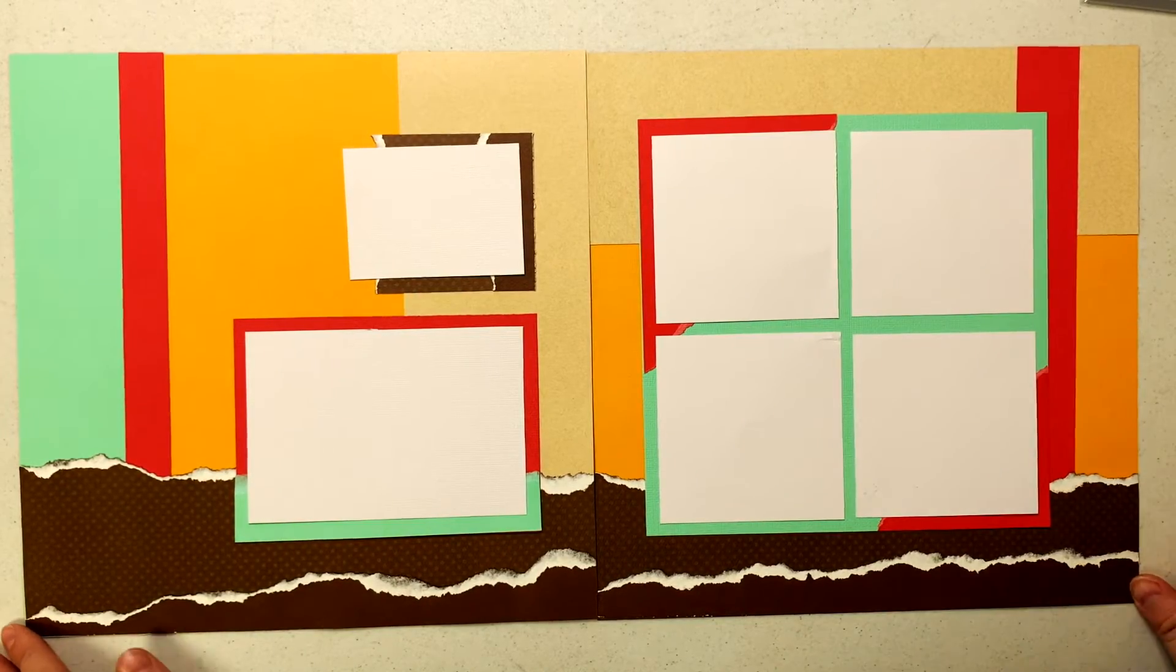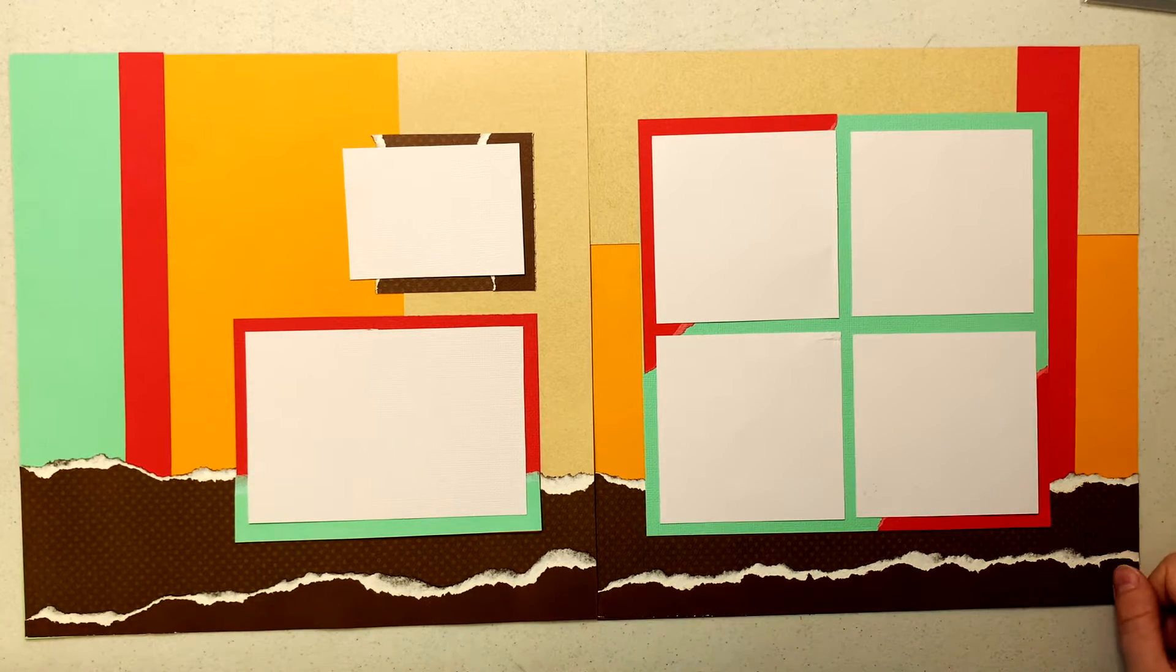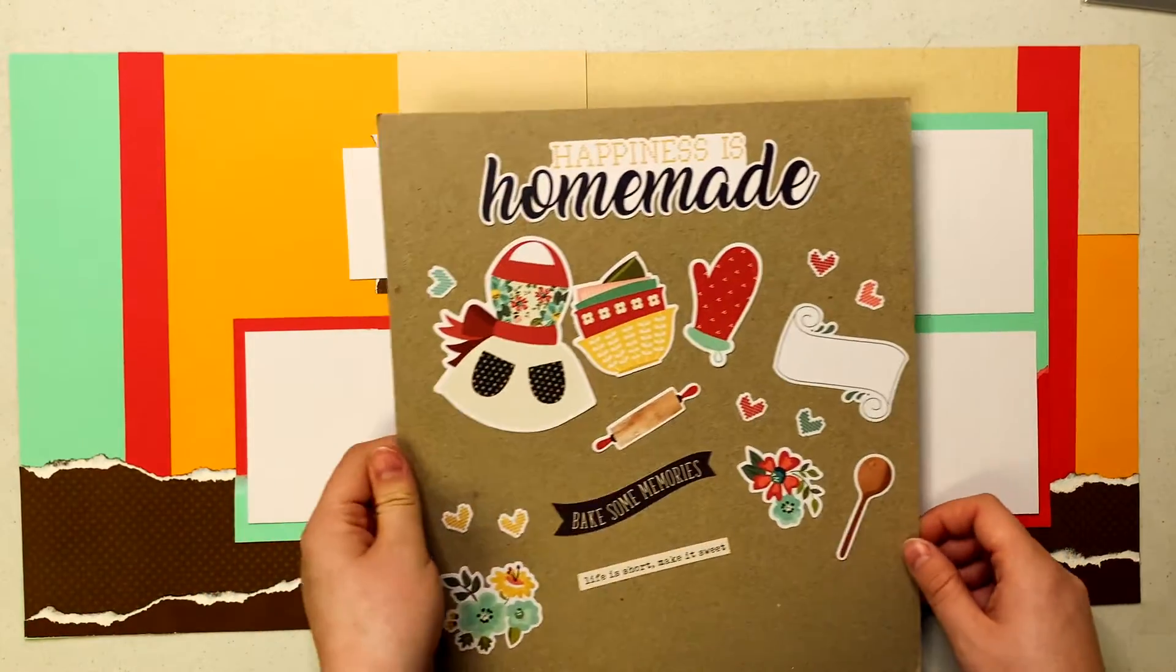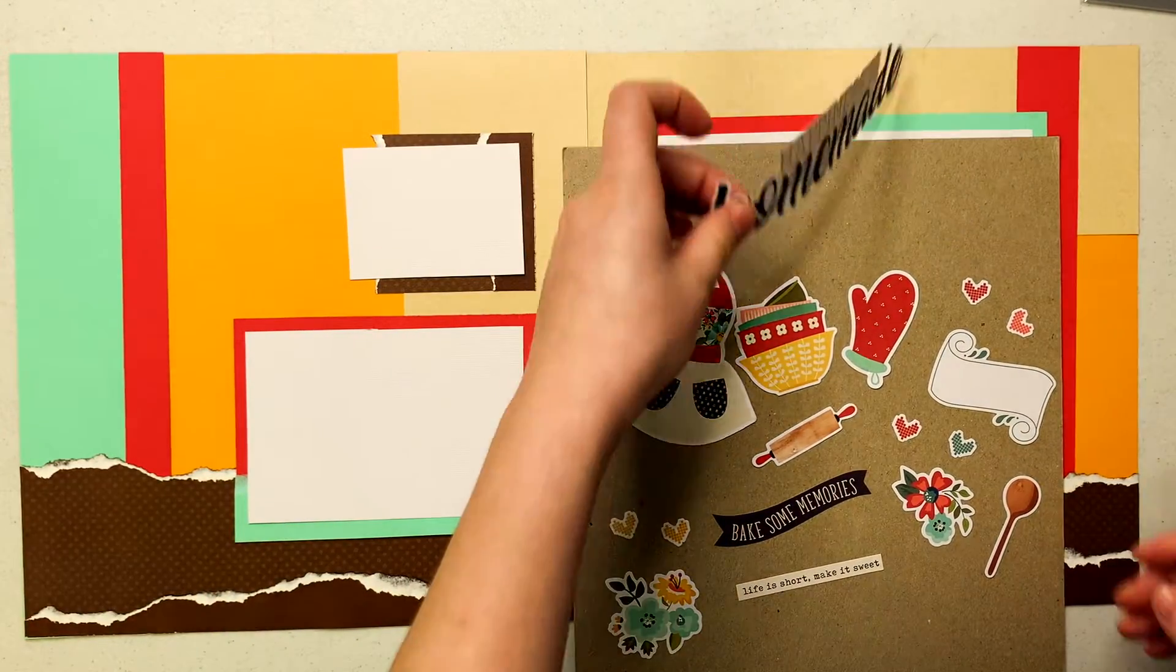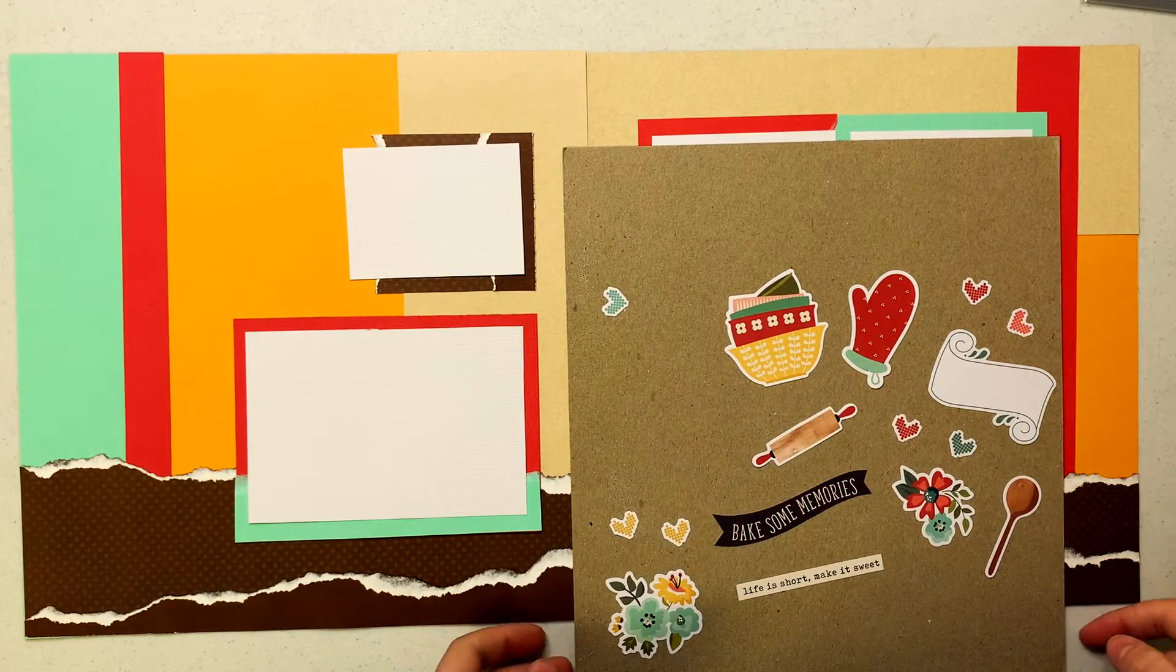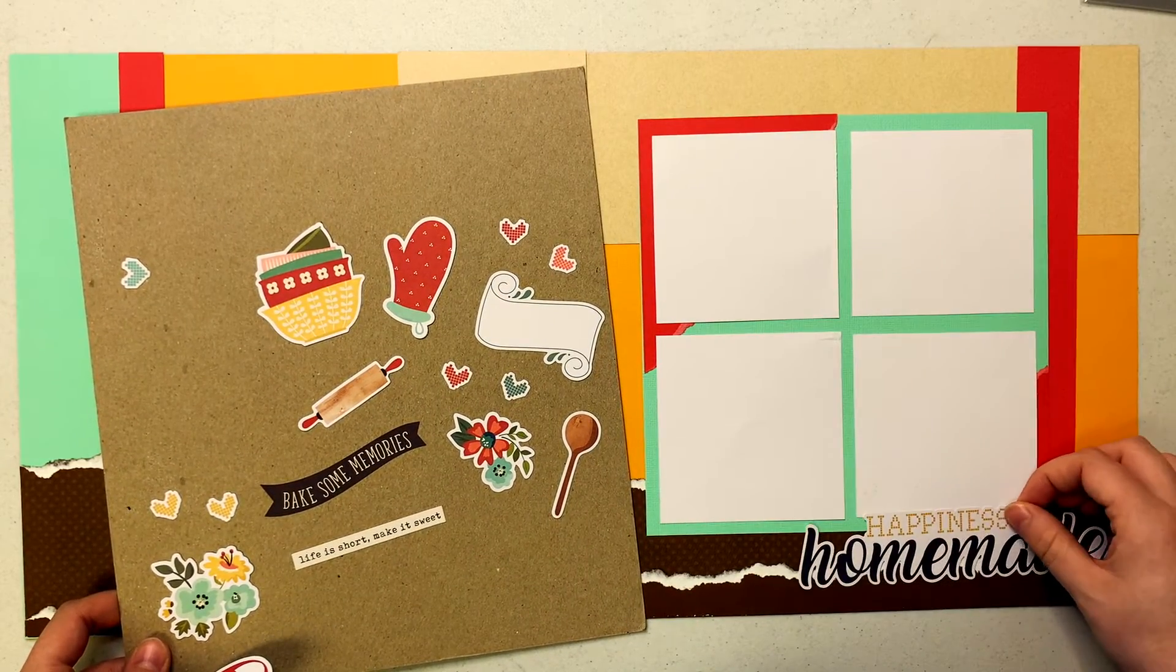All right, this is what my layout looks like with all of my card stock down. I am now going to bring in some of my simple stories page pieces. I always start with the biggest pieces so that includes the title, maybe this little apron, as well as some of these other ones here. And then I'm just going to start laying those out where I think they would look really good.